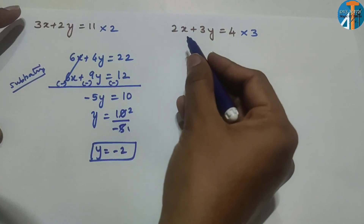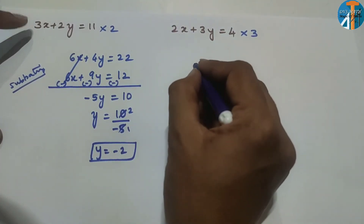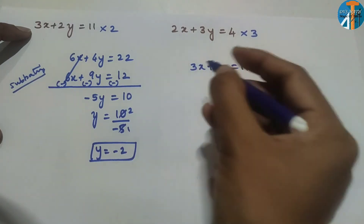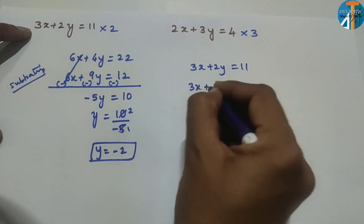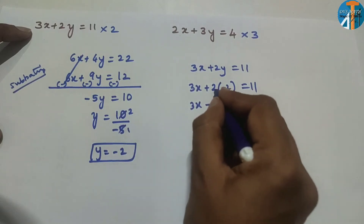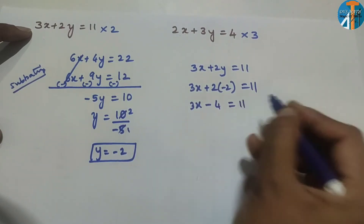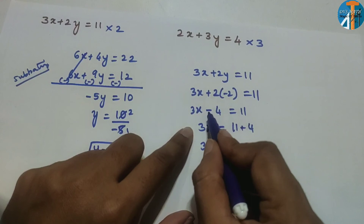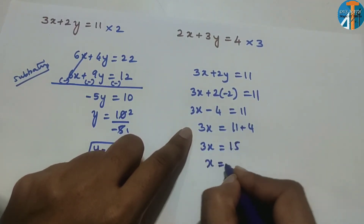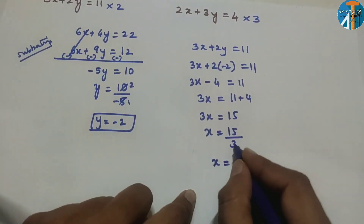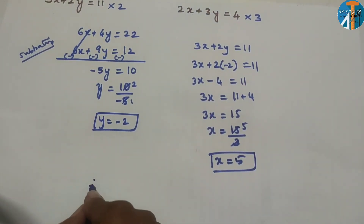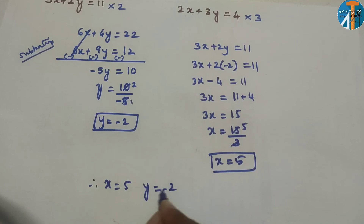Now substitute y = minus 2 into 3x + 2y = 11. So 3x + 2×(minus 2) = 11. That gives 3x minus 4 = 11. Adding 4 to both sides: 3x = 15. Therefore x = 15 by 3, so x = 5. Therefore x = 5 and y = minus 2.